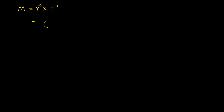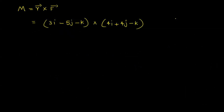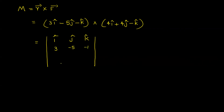Now we have the position vector R. Put it in M equals R cross F: (3i minus 5j minus k) cross (4i plus 4j minus k). To write a cross product, we write a determinant with unit vectors i, j, k in the first row, coefficients 3, -5, -1 in the second row, and coefficients 4, 4, -1 in the third row.